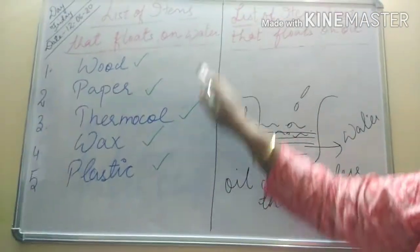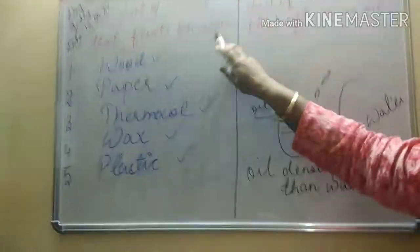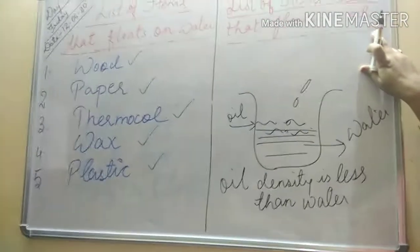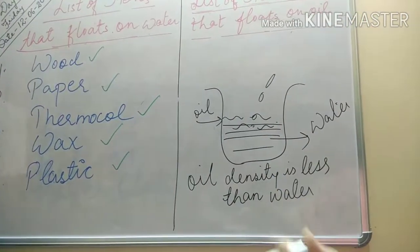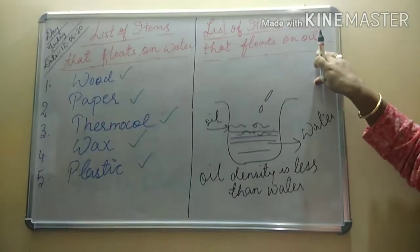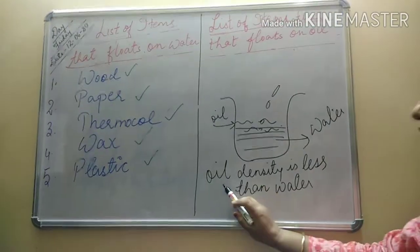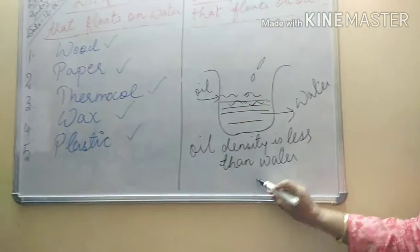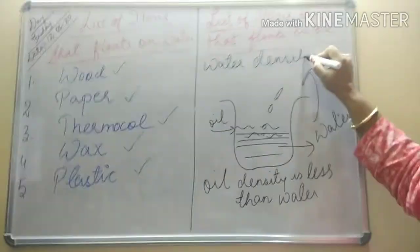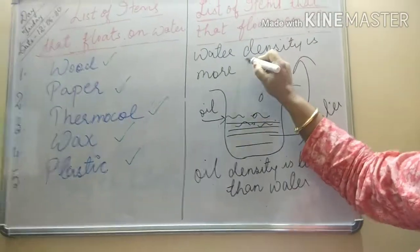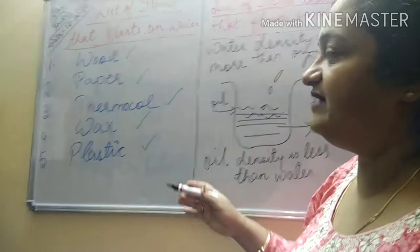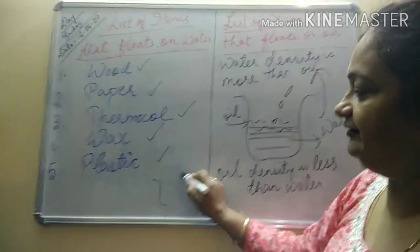Why does the oil float? Because oil density is less than water. So children, if things are floating on water, and water is much more denser than oil, then definitely those things will also float on oil. The reason is oil density is less than water, or in other words, water density is more than oil.